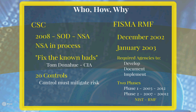It required executive agencies within the federal government to abide by these rules. It was implemented in multiple stages: phase one, between 2003 and 2012, the standards and guidelines were developed. Phase two, overlapping from 2007 to 2012, was the actual implementation and assessment. In this secondary phase, NIST and its Risk Management Framework was actually established.